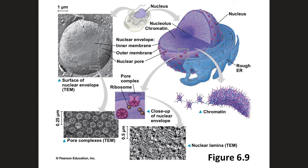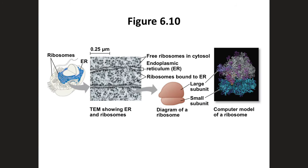The nucleolus is located within the nucleus and is the site of ribosomal RNA, or rRNA, synthesis. Ribosomes are the site of protein synthesis. We find ribosomes within the cytoplasm of the cell. Ribosomes are found in two different places: attached to the endoplasmic reticulum, giving it a studded appearance, and also free within the cytoplasm — referred to as free ribosomes. These ribosomes are composed of ribosomal RNA, or rRNA, and proteins.